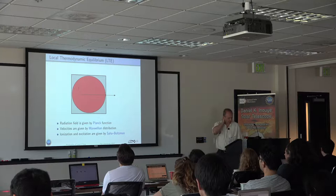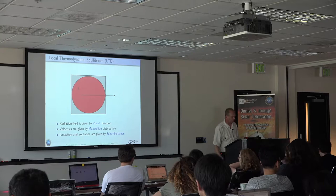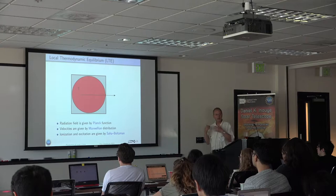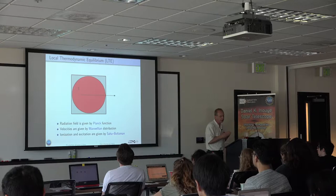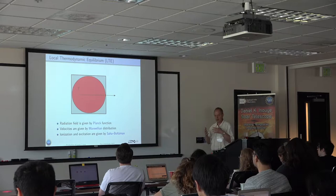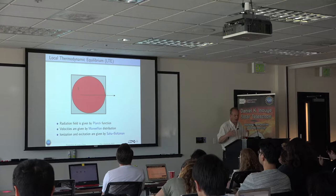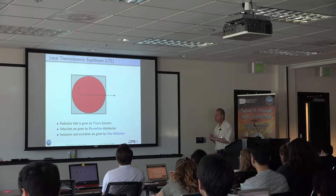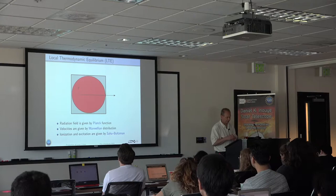We will talk about mostly lines in thermodynamic equilibrium. Essentially, the atmosphere of the sun in the lower layers has enough thermal mass that the flow of radiation is small compared to the amount of energy contained in it. Just like an oven with a little pinhole, the material and the radiation field are in equilibrium and are described by a single parameter: the kinetic temperature. This means the radiation field is given by the Planck function, the velocities by the Maxwellian distribution, and the ionization and excitation by the Saha-Boltzmann rules.